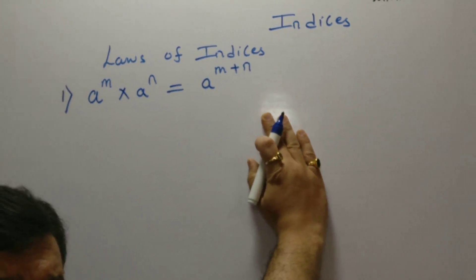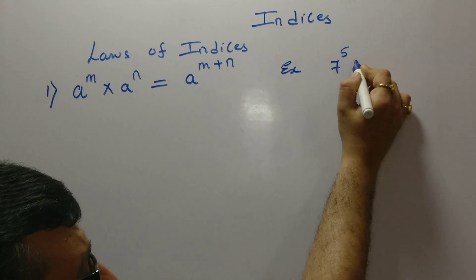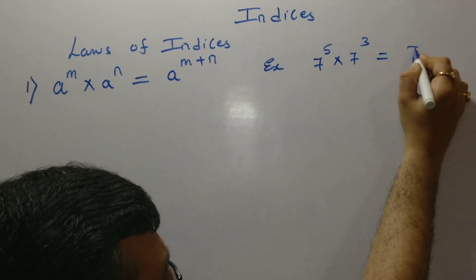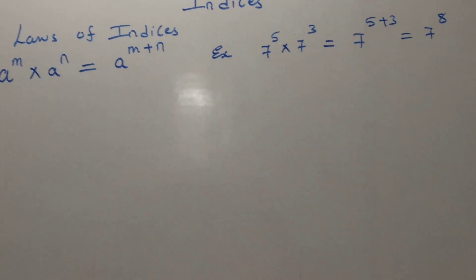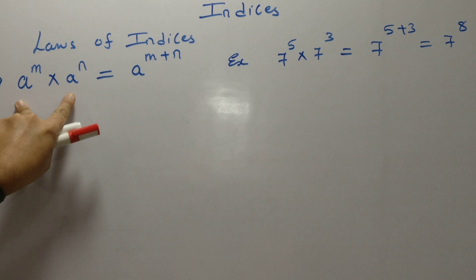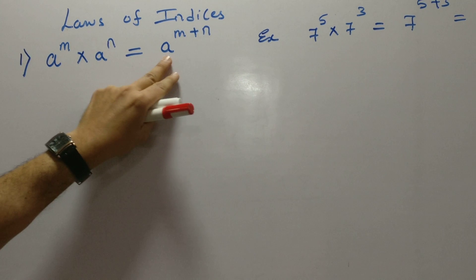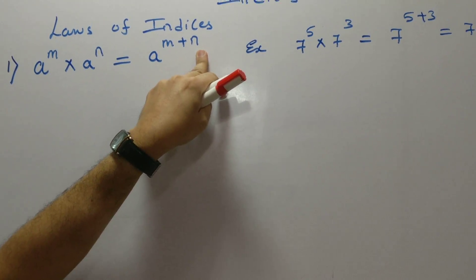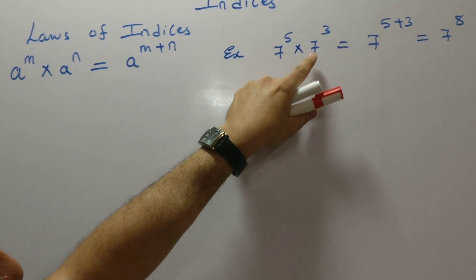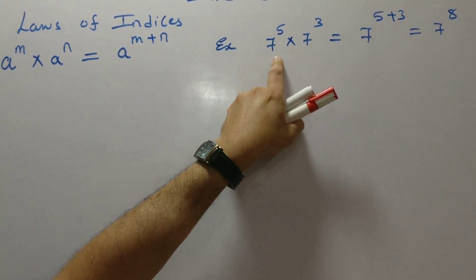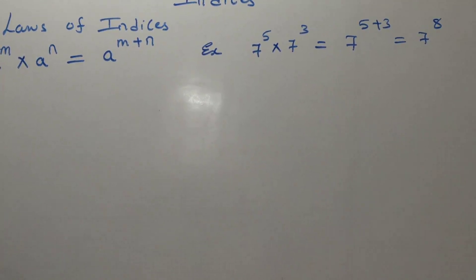To understand this law, let's take an example. If I am given 7 raised to 5 into 7 raised to 3, answer is 7 raised to 5 plus 3, which is 7 raised to 8. The law states that whenever the bases are equal, we simply need to sum up their powers. The bases need to be the same — 7 and 7, yes. Their powers simply get added up: 5 plus 3 gives 7 raised to 8.